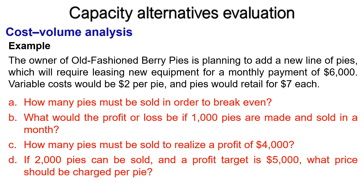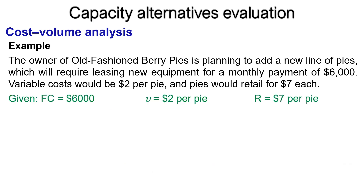C) How many pies must be sold to realize a profit of $4,000? D) If 2,000 pies can be sold and a profit target is $5,000, what price should be charged per pie? The given values are: fixed cost FC = $6,000, unit variable cost V = $2 per pie, and revenue per unit R = $7 per pie.